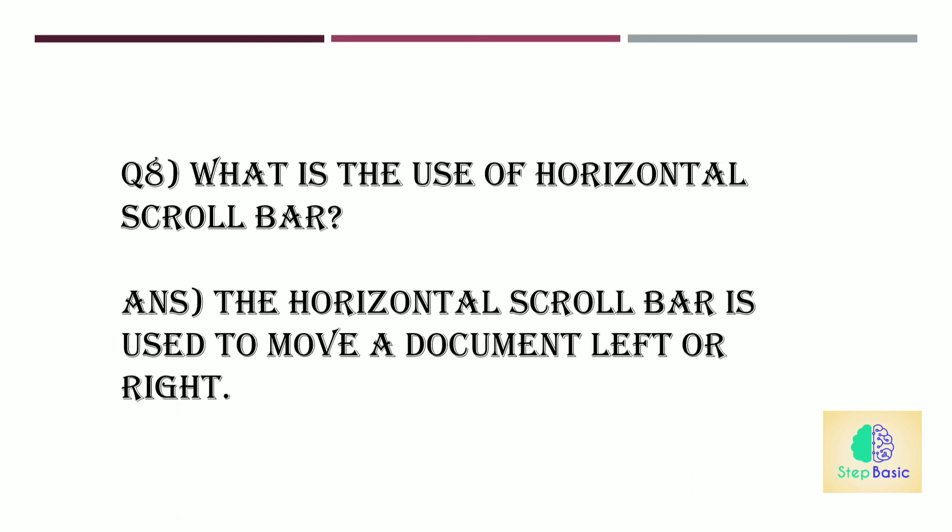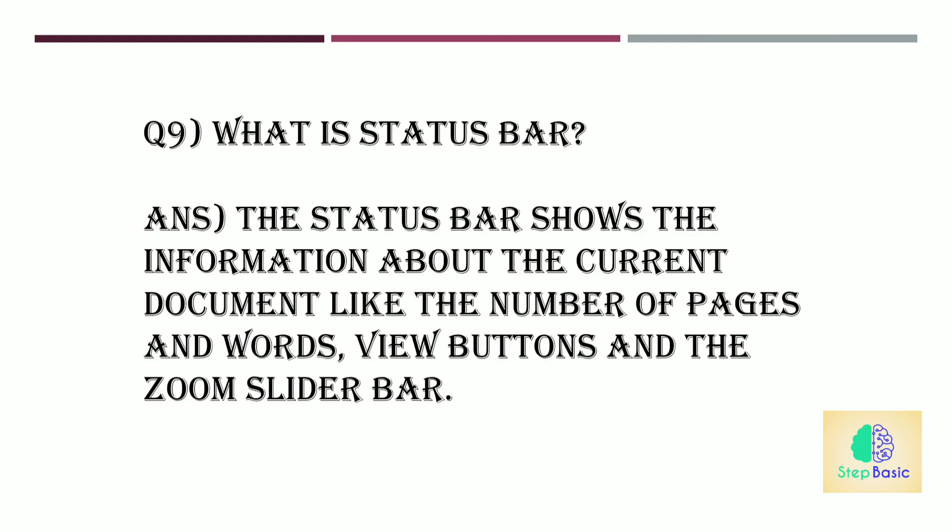Question number 8: What is the use of the horizontal scroll bar? The answer is the horizontal scroll bar is used to move a document left or right. Question number 9: What is the status bar? The answer is the status bar shows information about the current document like the number of pages and words, view buttons, and the zoom slider bar.